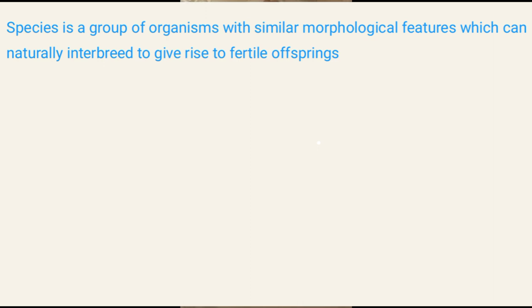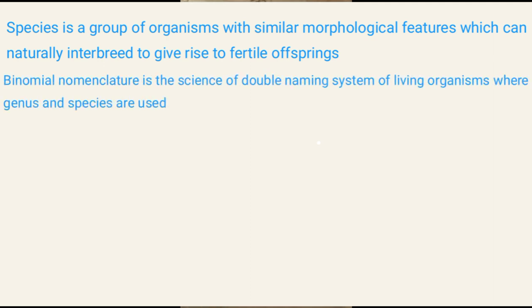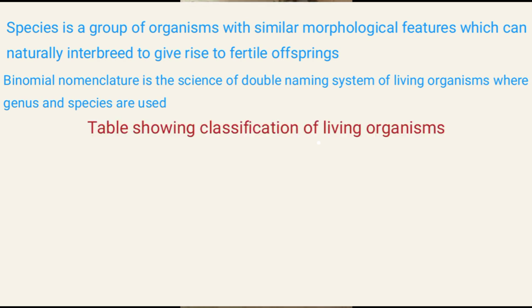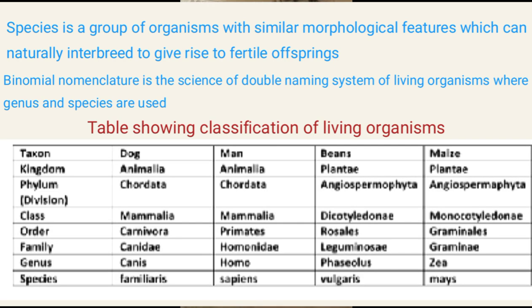We have binomial nomenclature. It is the science of double naming system of living organisms, where genus and species are used to scientifically name living organisms. This is a table showing scientific names of different living organisms, starting with kingdom up to species.